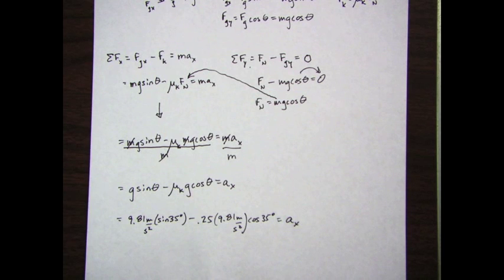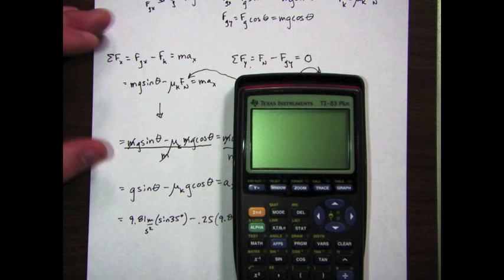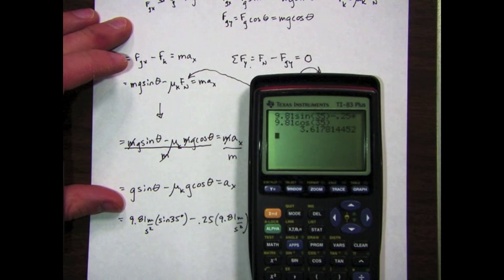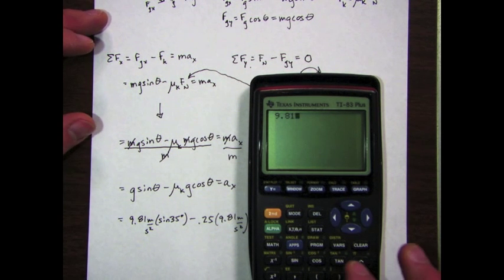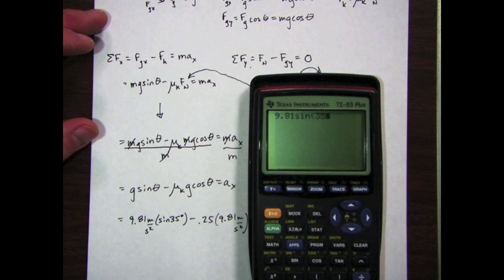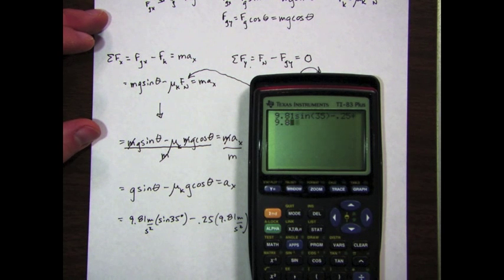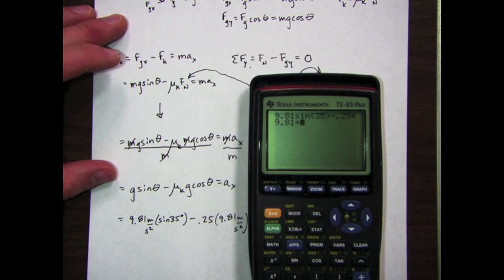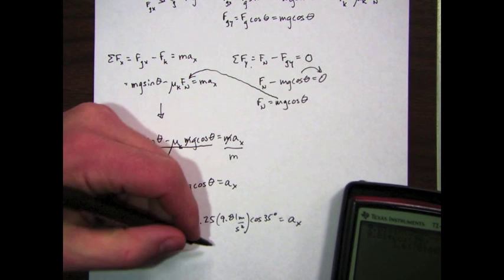So let's get that calculator out. We go 9.81 times the sine of 35 minus—I better make sure I do my parenthesis right—minus 0.25 times 9.81 times the cosine of 35 equals 3.61.